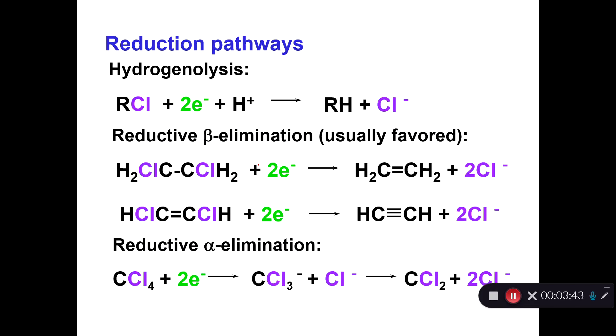There are three main mechanisms. Really, these two are the two most important. Hydrogenolysis is where you react the chemical, say an aliphatic chloride, two electrons, add a proton, you replace the chlorine or the halogen with a hydrogen, and you kick out the chloride. Because you're replacing something with hydrogen, that's why it's called hydrogenolysis. Not to be confused with hydrolysis, this is hydrogenolysis.